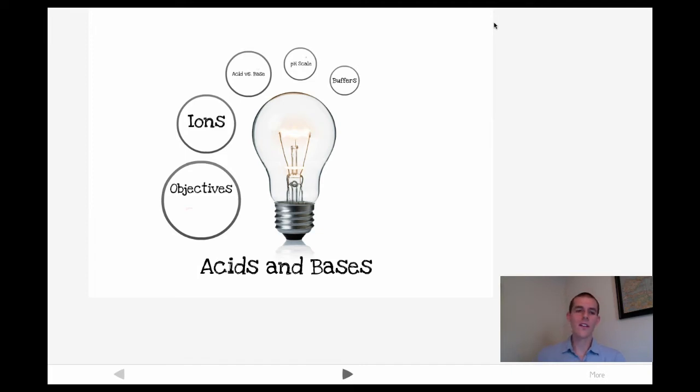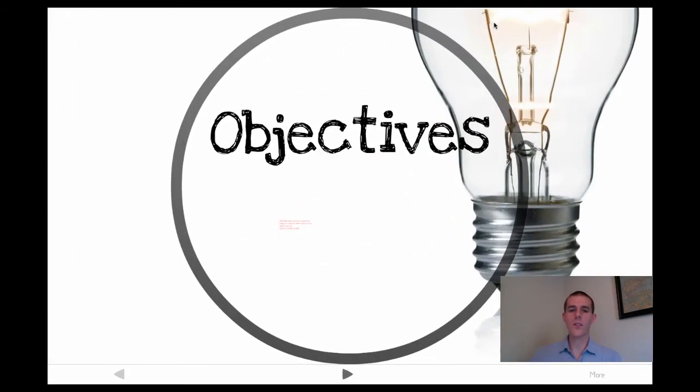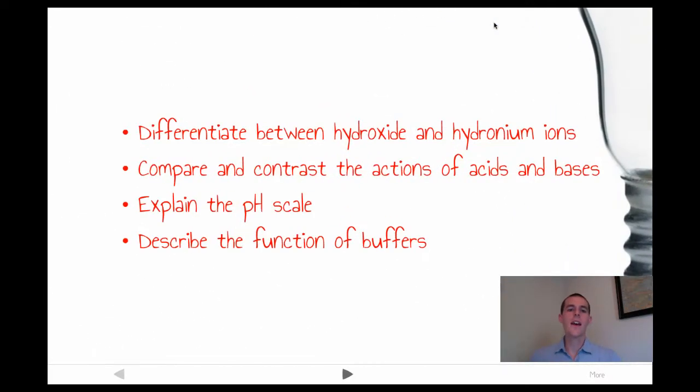Like always, I like to give you the objectives before we get going so you kind of know what we're driving at. First of all, there are four things we're going to talk about today. By the end, you should be able to differentiate between hydroxide and hydronium ions, compare and contrast the actions of acids and bases, explain the pH scale, and describe the function of buffers.